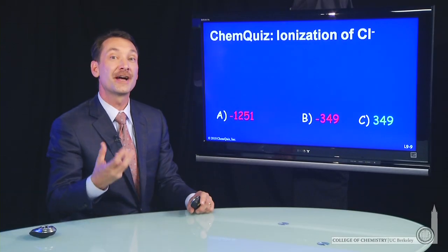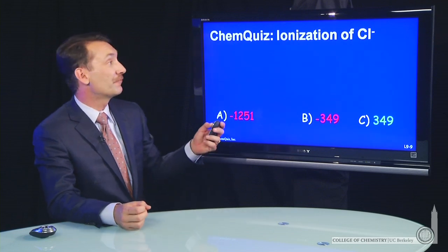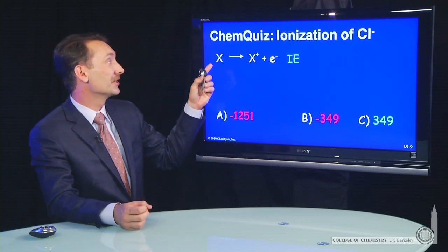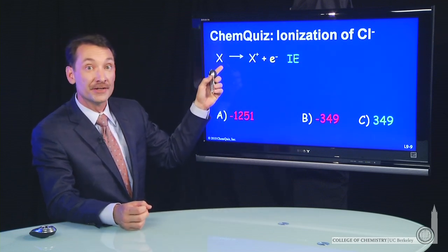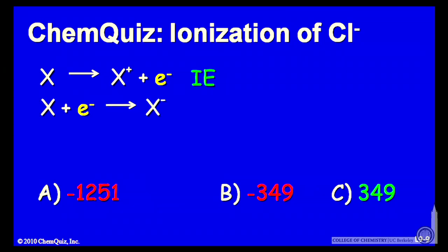We're trying to determine the ionization energy of the Cl minus ion. So if we look at the definition of ionization energy, it's the energy required to remove an electron from a species. The electron affinity is the amount of energy associated with adding an electron to a species.